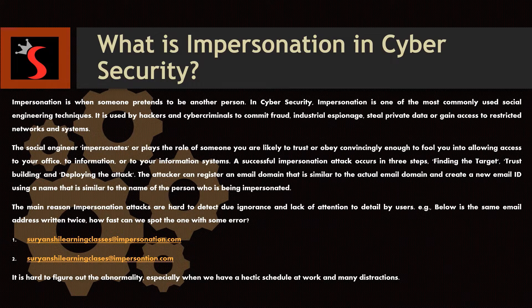Impersonation is used for industrial espionage, to steal private data, or to gain access to restricted networks and systems. The social engineer impersonates the role of someone you are likely to trust or obey, convincingly enough to fool you into allowing access to your office, to information, or to your information systems. A successful impersonation attack occurs in three steps: finding the target, trust building, and deploying the attack.